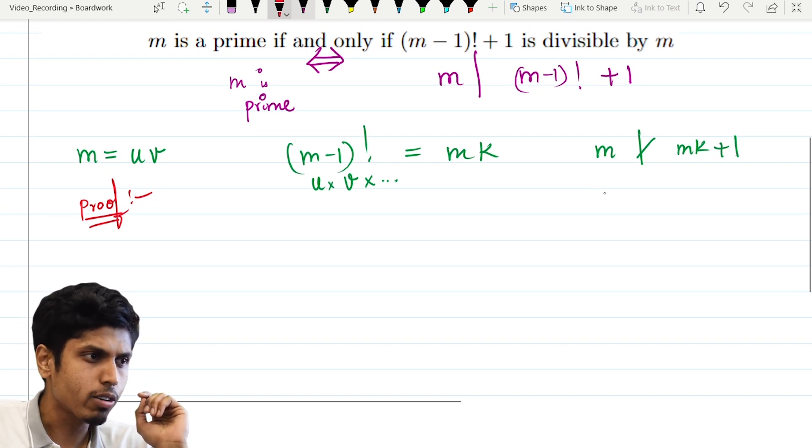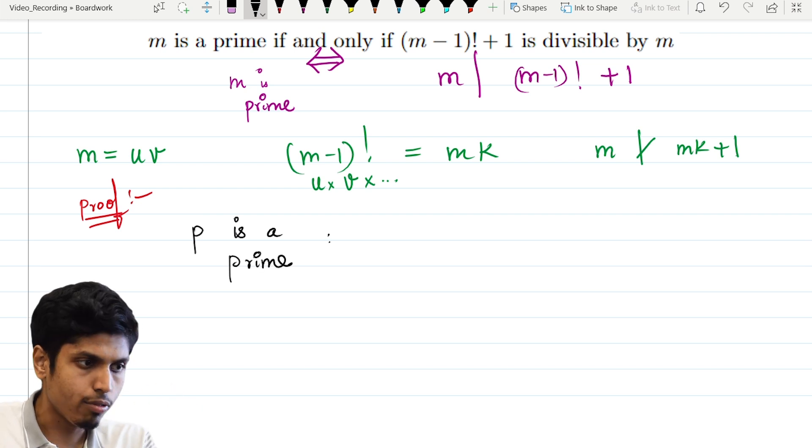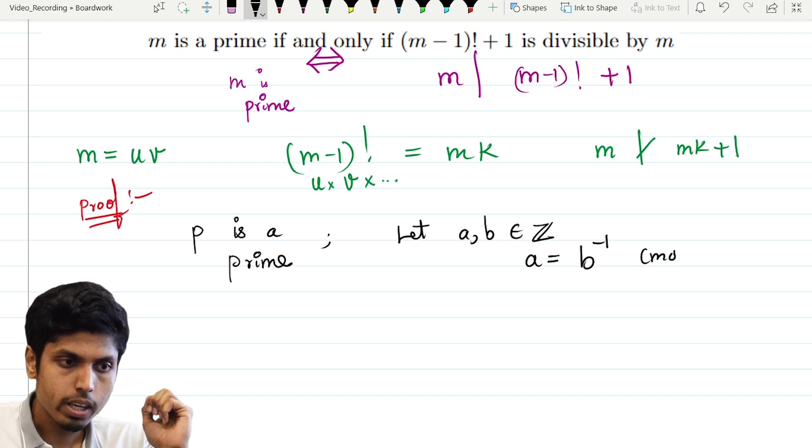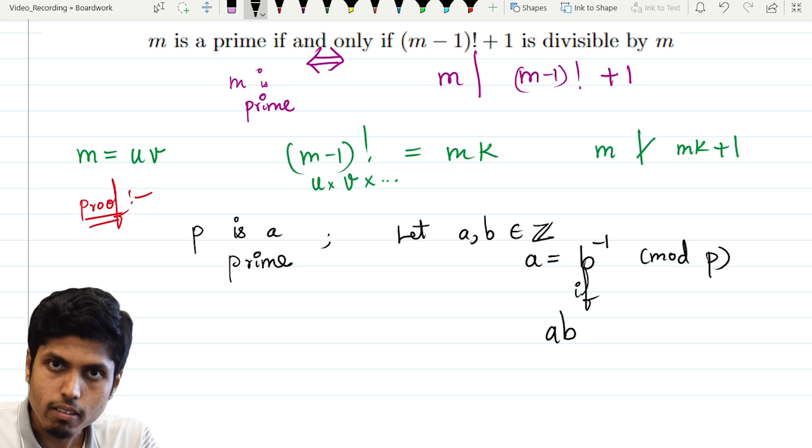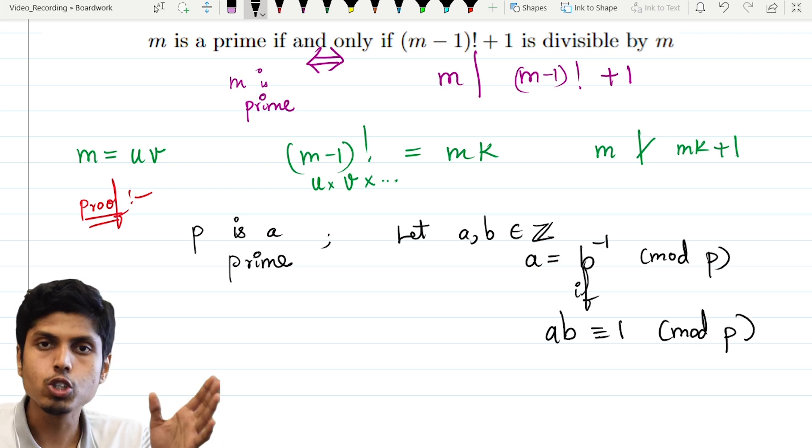Let's say that m is prime. So instead of m, I would prefer to use p. So let's say p is a prime. And consider the following ideas. We say, let a and b are integers. We say that a is inverse of b or multiplicative inverse of b modulo p if a into b leaves a remainder 1 when divided by p, or it is congruent to 1 mod p. You can say it in both ways. Both are the same. The remainder that it leaves should be 1. That is the meaning of inverse.